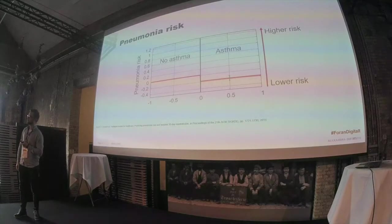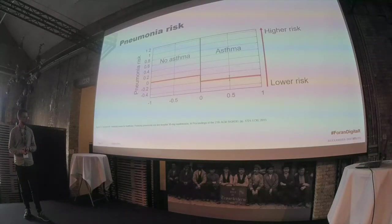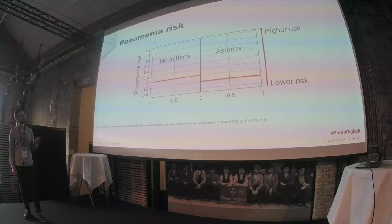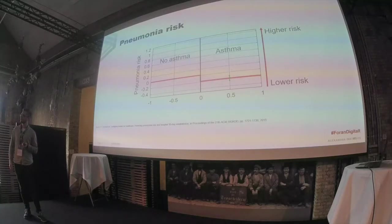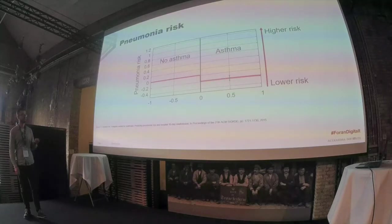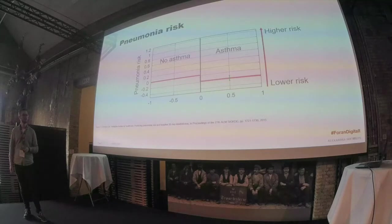A more critical case is in medicine. This is a classical example from 2015 where they looked at a model predicting the likelihood of being severely ill or dying from pneumonia. The model learned that when someone has asthma, they have a lower risk of dying from pneumonia — which is not really the truth. The reason is that people with asthma in the dataset had better medical treatment to begin with, so they were less likely to die. But that's not the world you'd deploy this model in, so in this case you probably shouldn't use it.